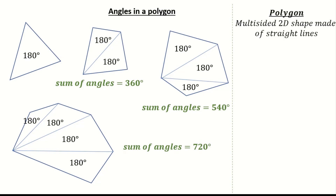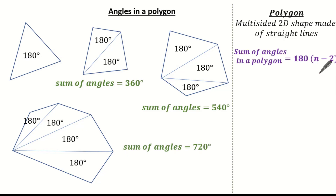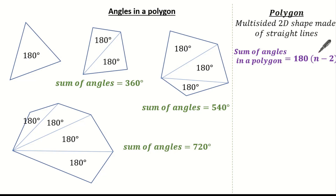Now an easy way to work out the sum of angles is using this formula: the sum of angles in any polygon is 180 degrees multiplied by n minus 2, where n represents the number of sides.